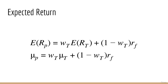The expected return of our new portfolio: taking the expected value of both sides gives μ_p equals w_t times μ_t plus (1 − w_t) times r_f. This one should be pretty straightforward.